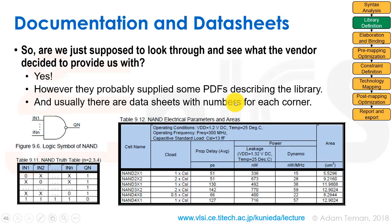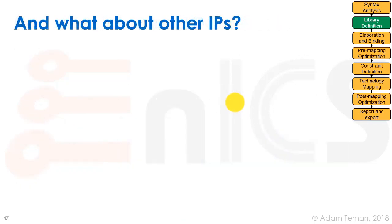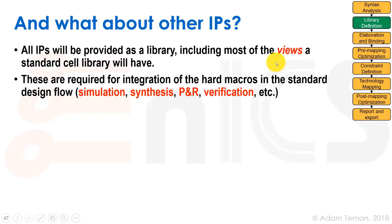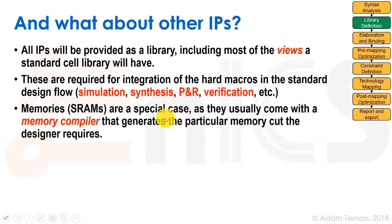As for other IPs — such as SRAMs, analog IPs, or IO cells — these are not standard cells per se; they have more complex functionality and are provided as hard macros. When you receive an IP, you get the same type of library as a standard cell library, including most of the same views required for integrating hard macros into the standard design flow. For instance, there will be a behavioral Verilog file describing how the IP behaves, as well as LIB files and so forth.